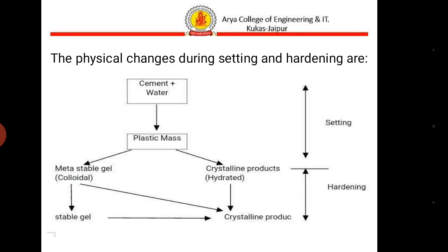Here is a flow chart showing that when water is added to cement it converts into a plastic mass. After that, crystallization completes — the formation of plastic mass is called setting, and the formation of crystalline products is called hardening. Thank you.